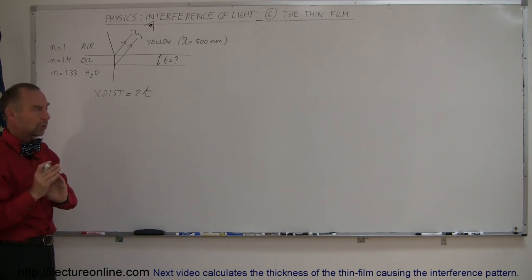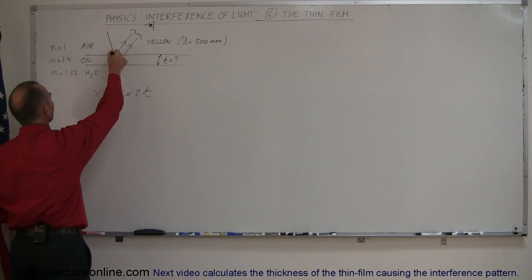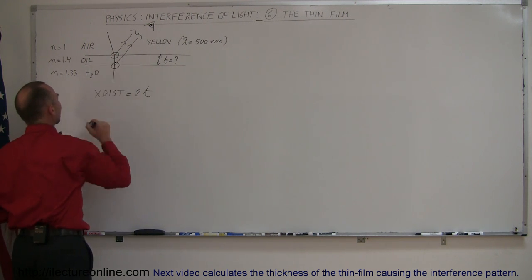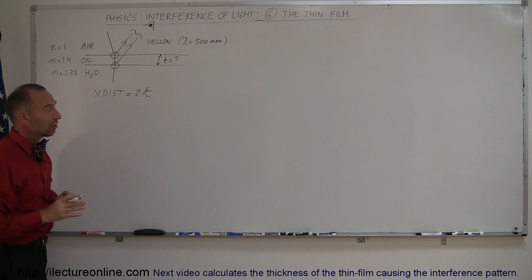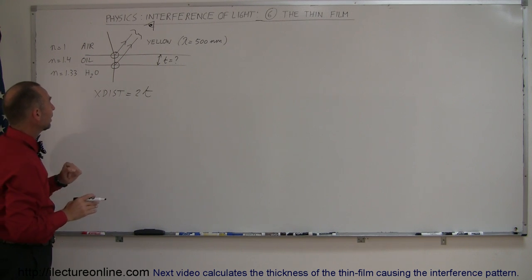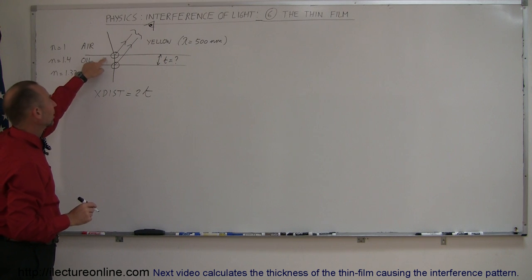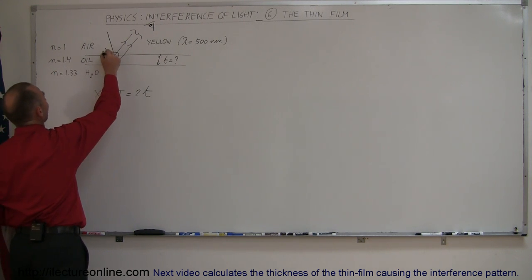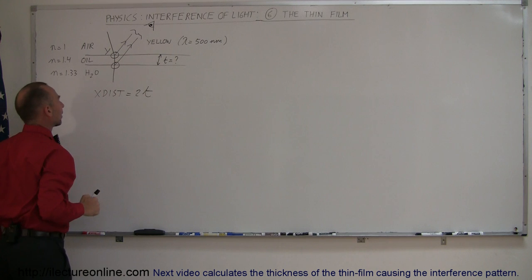However, before we go there, let's take a look at these boundaries and determine if there was a phase shift. Notice a phase shift when light is reflected off a boundary will always occur when the index of refraction on the other side is greater than where the light came from. In this case it came from air and the boundary on the other side is oil, so the index of refraction is greater and we can say yes there was a phase shift at this particular boundary.